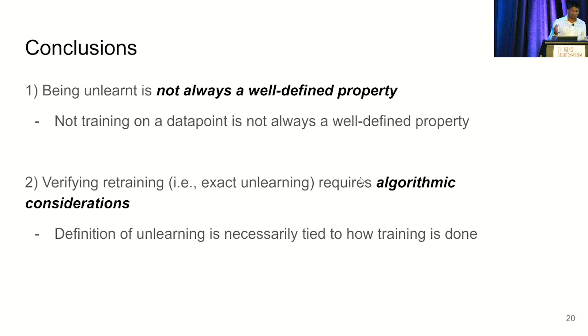But what are really the conclusions, the insights we've gained by thinking about plausibility for unlearning? The first thing is that being unlearned is not always a well-defined property of a model or a distribution of models, which is to really say that if I was given a model or a distribution of models, it's not always clear, without some kind of requirements on the setting, what data points were used to train that model. And building on that, verifying retraining specifically requires algorithmic considerations. We have to be very specific about how training is done and the general data setup that we can use.